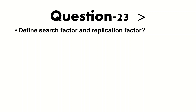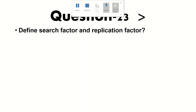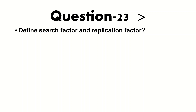The next question: define search factor. The search factor determines the number of data copies maintained by the indexer cluster — specifically, the number of searchable copies available in the bucket. The replication factor determines the number of copies maintained by the cluster, as well as the number of copies that each site has. One relates to searchable copies and the other to copies deployed across different sites.